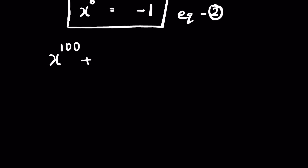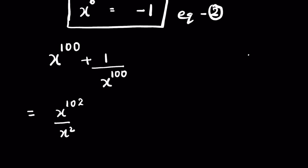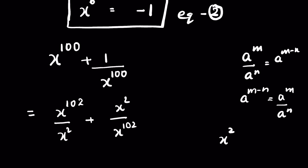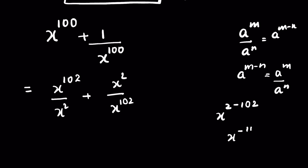Now we have to find x^100 + 1/x^100. We can write x^100 as x^(102-2), which equals x^102 / x², since a^m / a^n = a^(m-n). Similarly, 1/x^100 can be written as 1/x^(102-2), which equals x² / x^102, because x^(2-102) = x^(-100) and a negative exponent means the multiplicative inverse, giving 1/x^100.